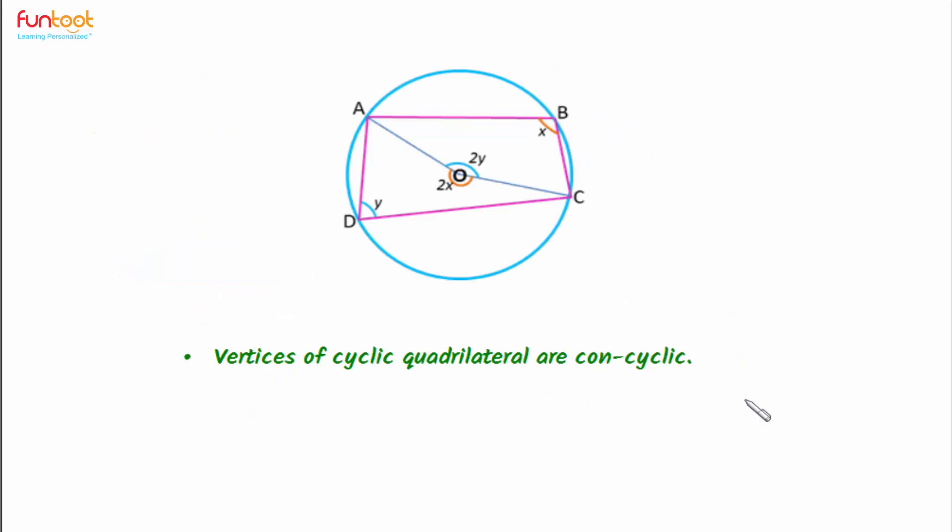Let's summarize what we have learned in this video. We have learned that vertices of a cyclic quadrilateral are concyclic, and opposite angles of a cyclic quadrilateral are supplementary.